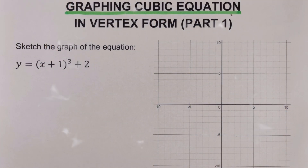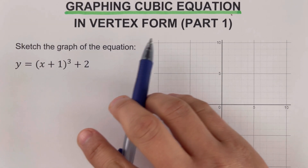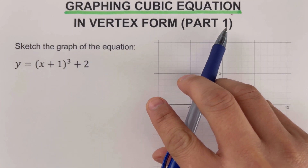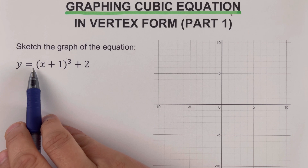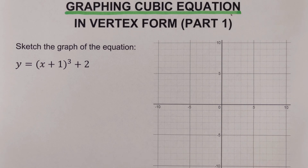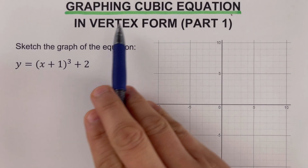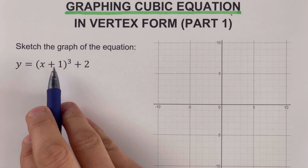Hello everyone. This video will focus on graphing cubic equations in vertex form, and this is the first part. In this part, our value for a is positive one, and the other example will be negative one. Before we go further, please feel free to check out the description box below for the link to the other series of topics related to graphing cubic equations in vertex form.